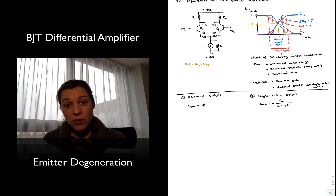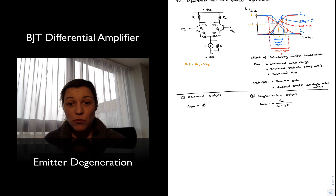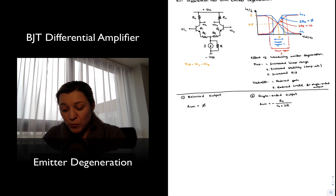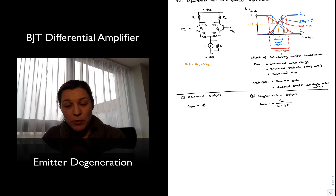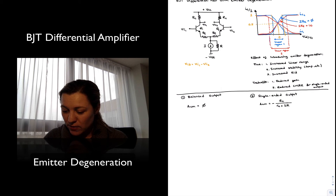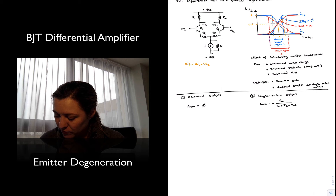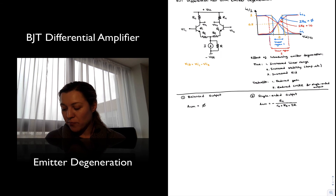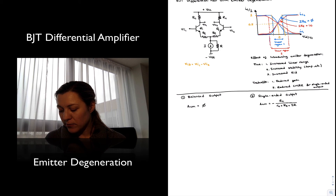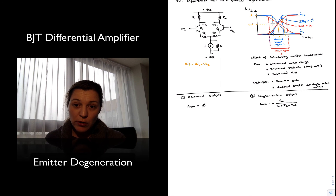For the single-ended output, the common mode gain was equal to negative RC divided by little rE plus 2R. Now that we have added RE, the overall emitter resistance is modified to little rE plus capital RE plus 2R. So the common mode gain becomes negative RC divided by rE plus RE plus 2R. The larger those emitter resistor values are, the smaller the common mode gain will be.